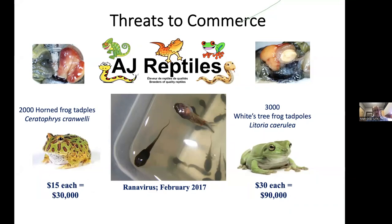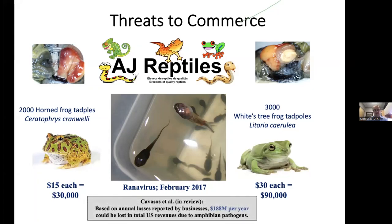We were involved in diagnosing a case of ranavirus that got into a captive population for a breeder, who literally lost revenues of over $100,000 within less than a week. The pet amphibian industry is very interested in solutions to reduce the occurrence of these pathogens in animals that are traded. Based on some surveys we did, we estimated that the U.S. pet amphibian trade industry could be losing up to close to $200 million a year due to the presence of BD and ranavirus.